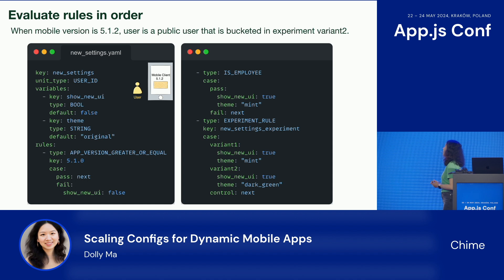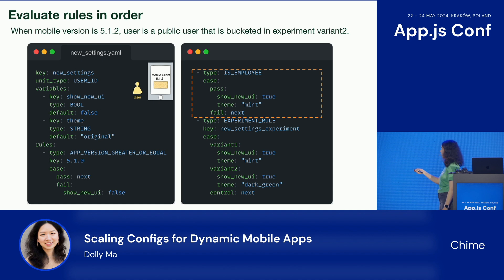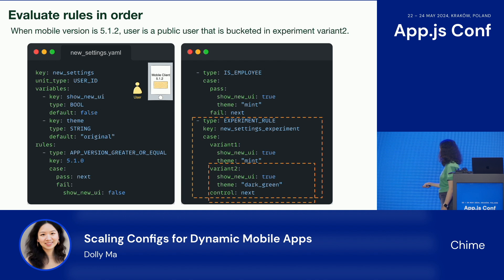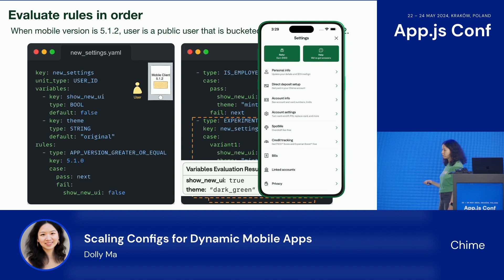Last example: when the mobile version is 5.1.2, the user is a public user, and they are bucketed in experiment variant 2. The first rule — app version rule — they are larger than 5.1.0, so pass. Next is employee — it's not an employee, so fail, next. We come to the experiment rule, and as we are in variant 2, we get: show new UI is true, theme is dark green. And this is the UI to show.